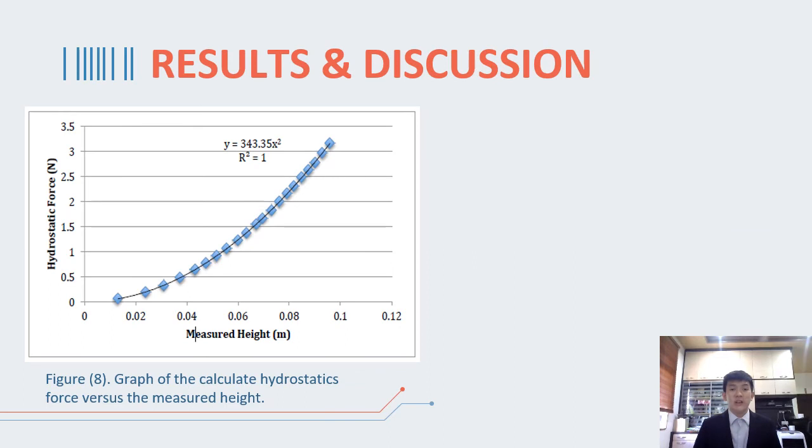Figure 8 shows the linear relationship between the hydrostatic force acting on the vertical rectangular surface and the measured height of water. In this graph we can see that the hydrostatic force increases when the measured height is increased.